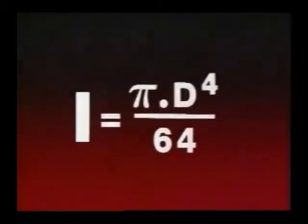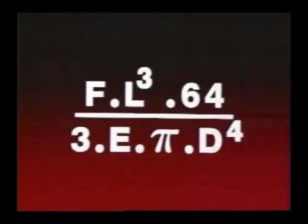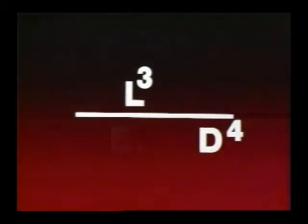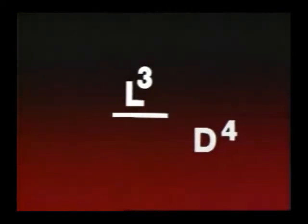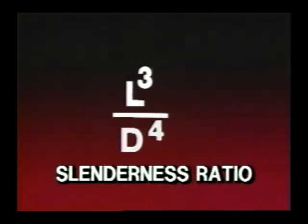By expanding this relationship to include the individual components of the moment of inertia, it will look like this. To simplify this even further, we'll remove all constant values, assume that all pumps will have similar impeller radial forces and shaft materials. This produces the relationship of L cubed over D to the fourth, which is generally known as the shaft slenderness ratio.